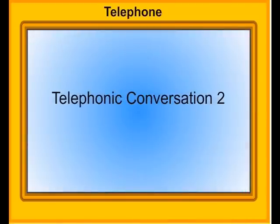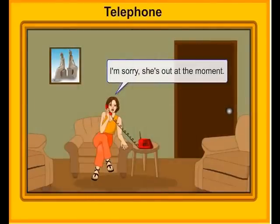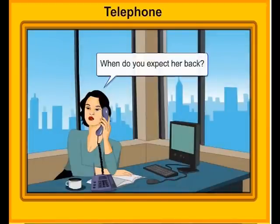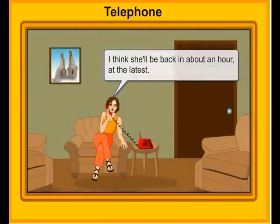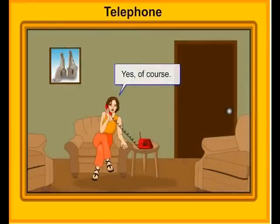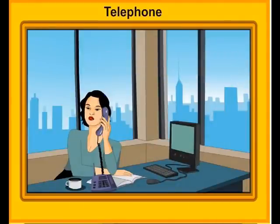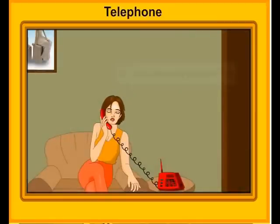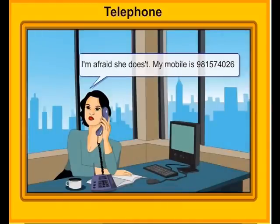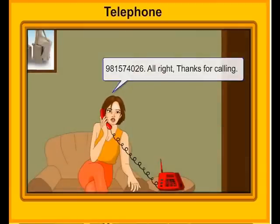Telephonic conversation two. Hello, could I speak to Maria, please? I'm sorry, she's out at the moment. When do you expect her back? I think she'll be back in about an hour at the latest. Well, may I leave a message? Yes, of course. Would you please ask her to call Chris when she gets back? Okay, does she know your number? I'm afraid she doesn't. My mobile is 98157 4026. 98157 4026. All right, thanks for calling.